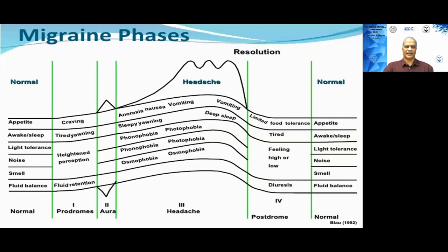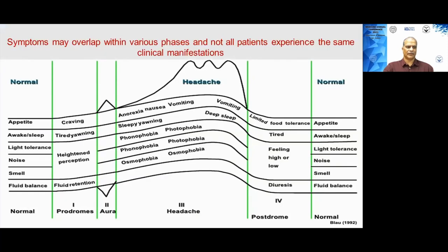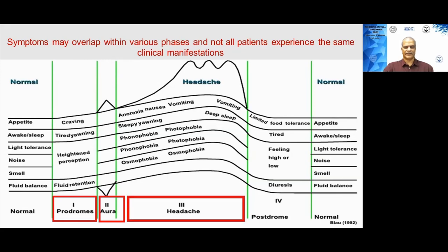In migraine, patients go through four phases. The first is the prodrome, where the patient feels tired, yawns excessively, and may crave certain foods. The second is the aura phase, with visual auras being most common, though other aura types occur. The third is the migraine headache phase with associated features, often ending with vomiting — which gives relief — or deep sleep. The fourth is the postdrome, where the patient feels very tired or sometimes even euphoric. Not all patients experience all four phases, and there can be quick overlap between them.